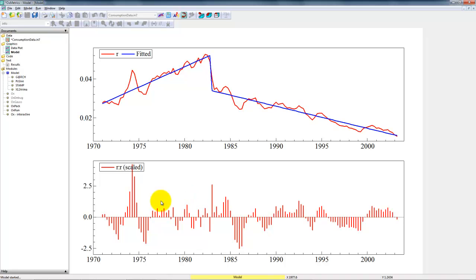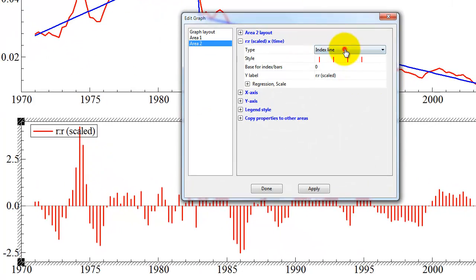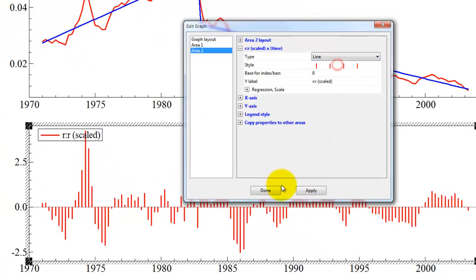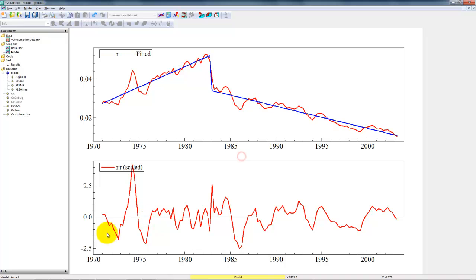Note that the detrended variable is actually the residuals. Here we see a plot of the scaled residuals. Double click. Instead of an index line, just select the line. And there we have a plot of the detrended variable, where we have taken out a broken deterministic trend and a level shift.